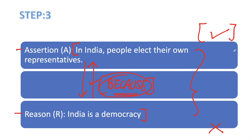These were our three easy steps. इस से हमें ये clear हुआ that our assertion is correct, our reason is correct, and assertion और reason दोनों inter-related हैं — दोनों का कोई connection है. अब हम चलते हैं अपने step 4 पे, जिसमें हम देखेंगे options.